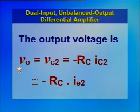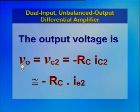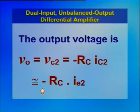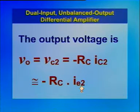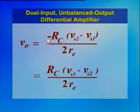The output voltage is taken only at the collector of one of the transistors. In this circuit, the output voltage is taken from transistor Q2's collector port. Therefore, V0 equals VC2, which equals minus RC·IC2, which equals minus RC·IE2, because IC2 is approximately equal to IE2. This approximation holds because IB2 is very small compared to IC2. Therefore, V0 equals minus RC·(VS2 minus VS1) divided by 2RE.